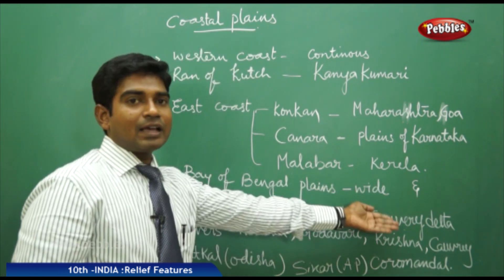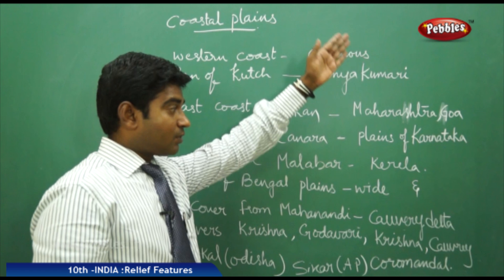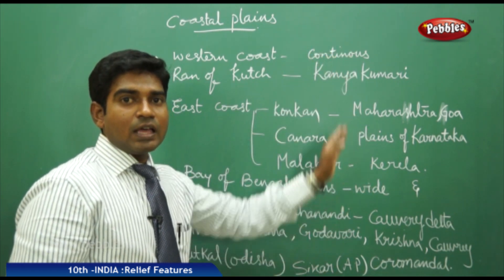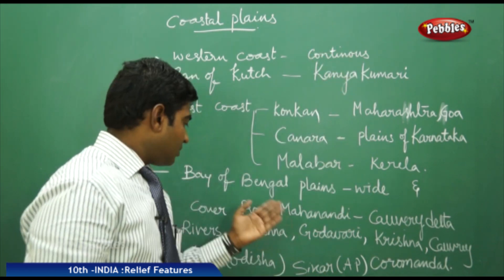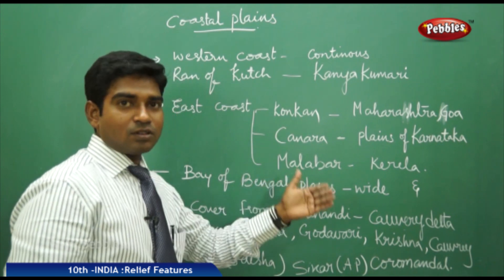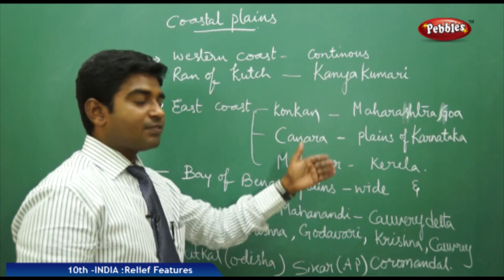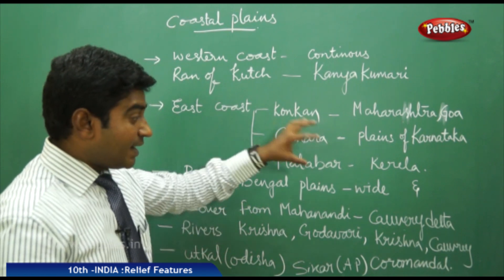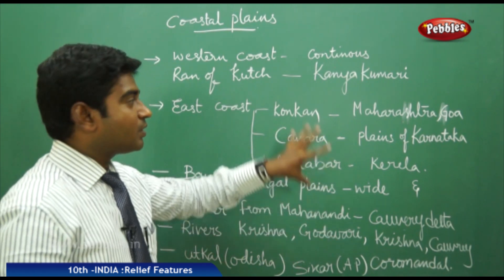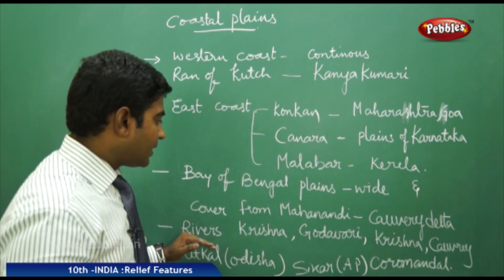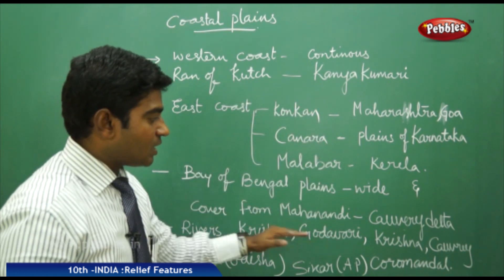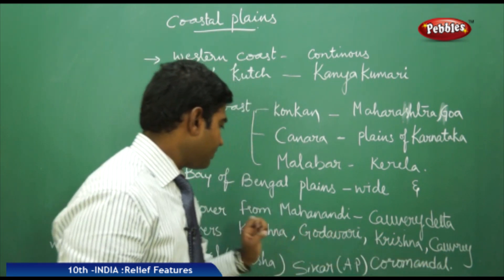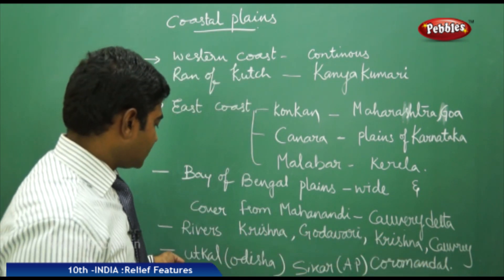The Bay of Bengal plains are wide, covering the regions of the Mahanadi and Kaveri deltas — from the Odisha region to the entire Tamil Nadu region — covered continuously, with breaks created by the major rivers of Krishna, Godavari, and Kaveri.